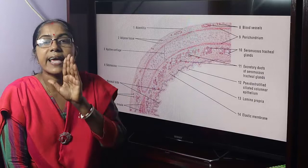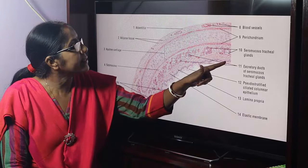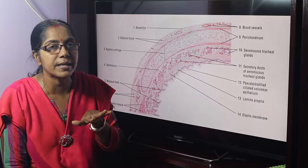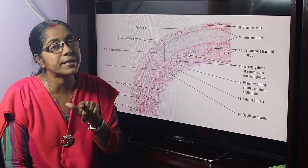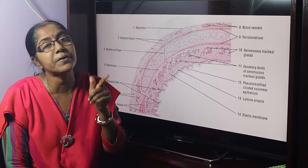From inner to outer: mucosa, submucosa, hyaline cartilage, and adventitia. Now, the mucosa is lined by pseudostratified ciliated columnar epithelium. What do we mean by pseudostratified ciliated columnar epithelium? The cells are arranged in a single layer but seem to be multilayered due to different cellular heights and different nuclear levels.